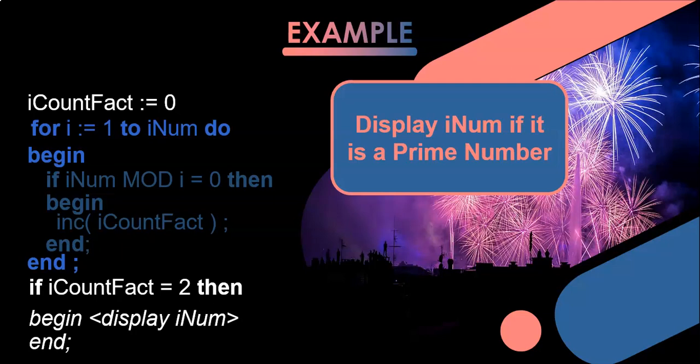Once the loop is finished, we check our count's value. If it's two, that means we only found two factors, therefore we can display the number and say this is a prime number. That's the code to work out if one rNum is a prime number.